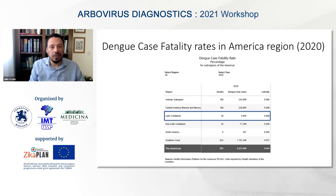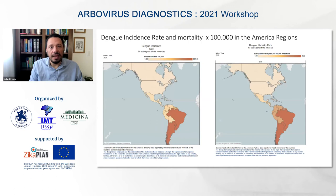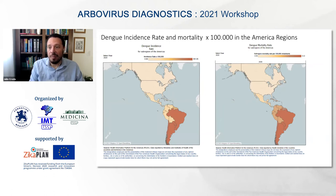When you look at the case fatality rate across the American region, the Latino Caribbean has high rates, but you also see lethality in the southern cone. The dengue incidence rates show the South region — especially Brazil, Paraguay, Uruguay, and Argentina — had a high number of cases in 2020, and these countries also account for the majority of dengue-related deaths.